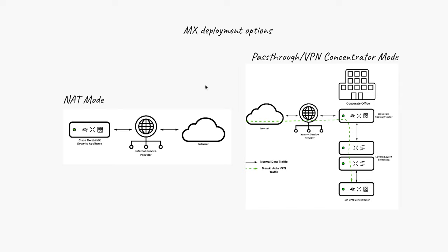There are two main modes: the NAT mode, and the pass-through or VPN concentrator mode, also called the one-arm VPN concentrator mode. Let's take a look at those two and see what the difference is between them.